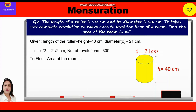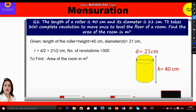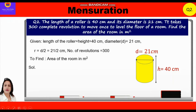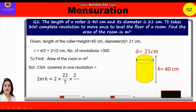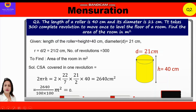All units are given in centimeters, so we will calculate the curved surface area in cm² and then convert to m². Curved surface area covered in one revolution = 2πrh = 2 × (22/7) × (21/2) × 40 = 2640 cm². Converting to m²: 2640 ÷ 10000 = 0.2640 m².